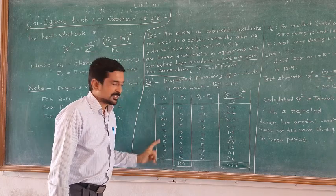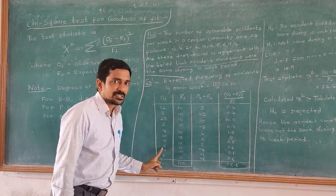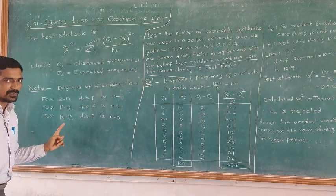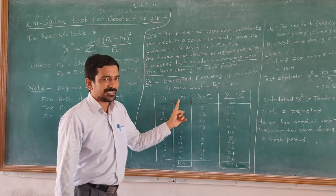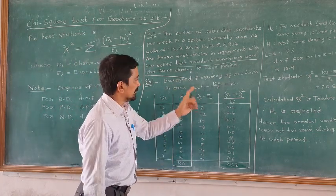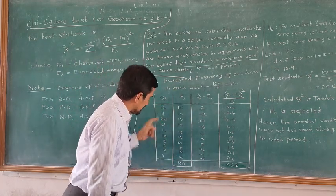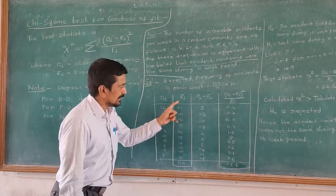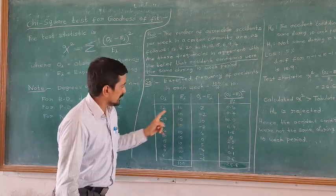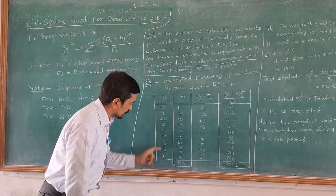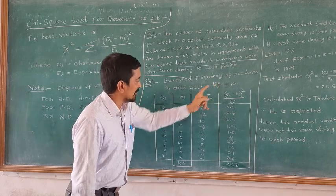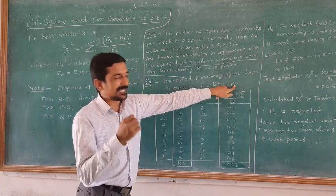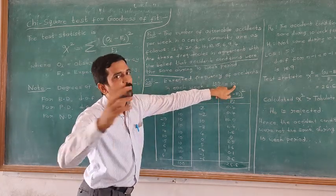Since a series of N values are given, there is no need to find the expected frequency using a special distribution. We find the expected frequency the normal way — that is, the sum of the observed values divided by the number of observed values. The total sum equals 100 and the number of observations equals 10, so the expected frequency in each week is 10.